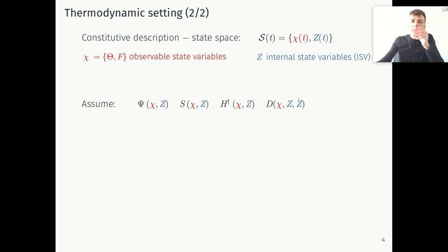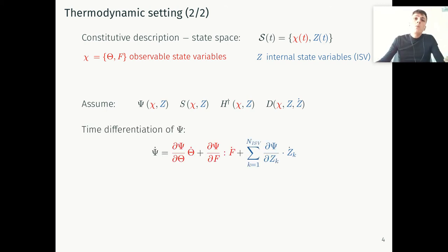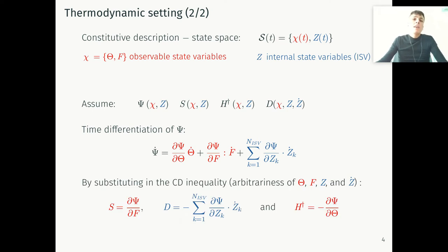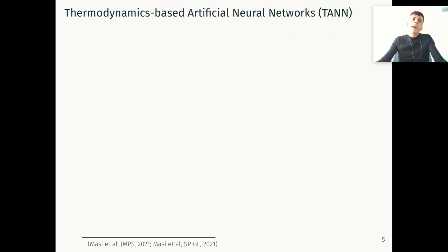We continue by assuming material classes such that the following dependencies are valid: the free energy, stresses, and entropy depend on both observable and internal variables, while the mechanical dissipation rate depends additionally on the internal variable rates. At this point, we compute the time differentiation of phi, the free energy, and substitute it into the volume average Clausius-Duhem inequality. This brings us to identifying three equality identities that you can find here: the first related to the stresses, the second to the mechanical dissipation rate, and the third referring to the entropy. For simplifying this presentation, we'll assume we're dealing with isothermal processes. Nevertheless, the framework is general and can be extended to generalized continuum theory.